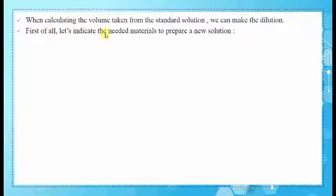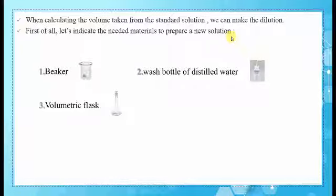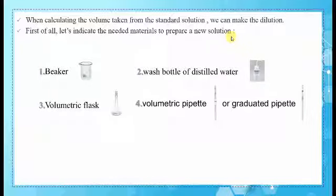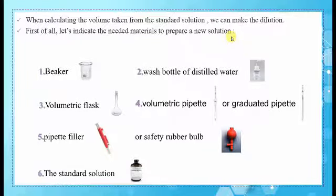First of all, let's indicate the needed materials to prepare a new solution in the lab: a beaker, a wash bottle of distilled water, a volumetric flask, a volumetric pipette or graduated pipette, a pipette filler or safety rubber ball, and the standard solution.